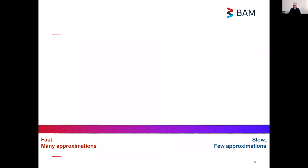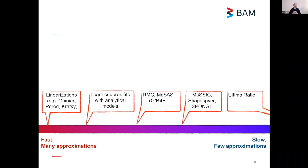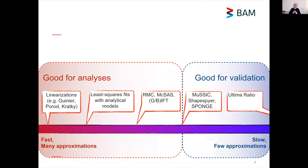For situations like these, for hierarchical structures and for real materials, it's nice if you could check that the methods that you're using to analyze your data are actually giving you the morphological parameters that you think you are getting. This is why you would like to use packages such as music, shapespire and ultimate ratio for validation of your analyses.